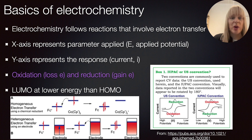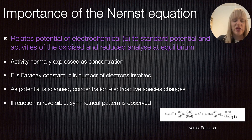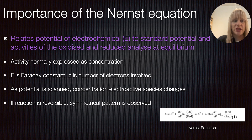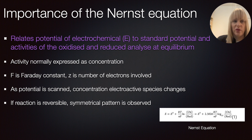In this video I'll talk about two equations that are really important in cyclic voltammetry. The first one is the Nernst equation, which you can see at the bottom. There are different ways to represent it as people use different symbols, but generally it relates the potential of an electrochemical cell to the standard potential and the activities of the oxidized and the reduced analyte at equilibrium. Activity is normally linked to concentration, so you look at the concentration of the oxidized and reduced species. Other parameters include the Faraday constant, temperature, the gas constant R, and the number of electrons involved in your reaction — shown as Z or sometimes as N.